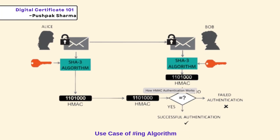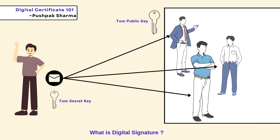In this example, Alice and Bob use a symmetric algorithm with a shared key. Alice hashes the email with the key, while Bob decrypts the email and creates the same hash to verify if authentication succeeds or fails. In another scenario, Tom holds a private key while his organization has his public key. When Tom sends an email, he encrypts it with his private key, and anyone in the organization can decrypt it using his public key, verifying the email's authenticity.